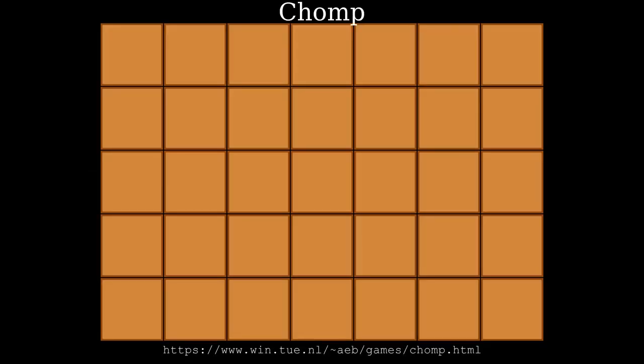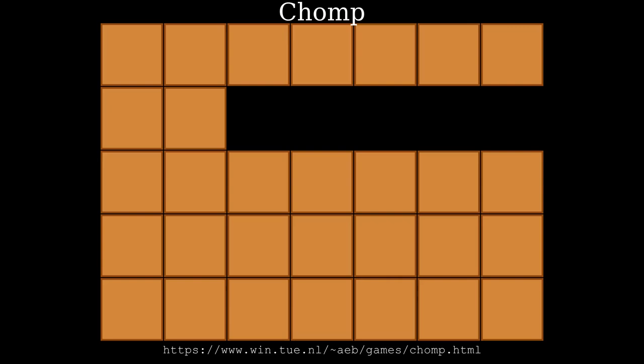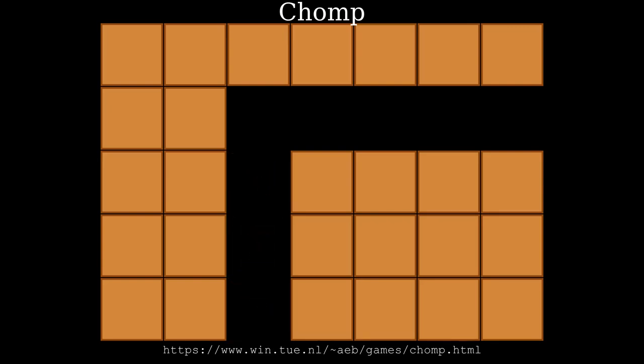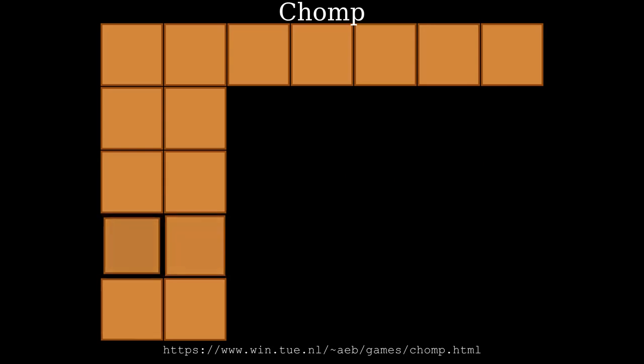The game of Chomp is a two-player game that starts with a rectangular bar of chocolate. A move consists of choosing a block to eat, eating all blocks to the right of it, all blocks below it, and all blocks to the right and below. Players take turns eating these rectangular bites out of the bar.